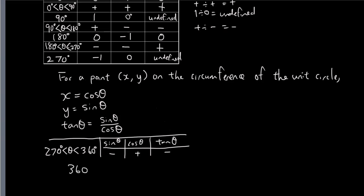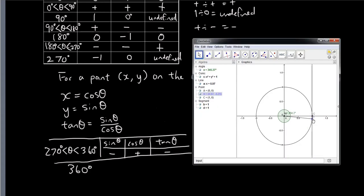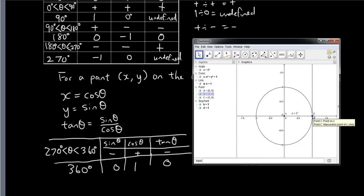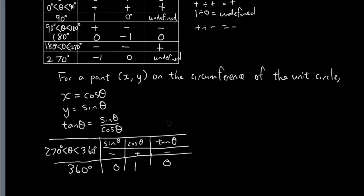And finally, when it's 360 degrees, we got the same value as when it was 0 degrees. So x coordinate is 1, y coordinate is 0, and tangent theta is 0. And it will repeat. The circular motion will repeat. So once we've had a whole revolution, let's say we have an angle bigger than 360 degrees, like 380 degrees, the same values of sine theta and cosine theta will repeat itself.